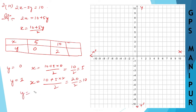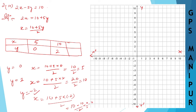Let's take y equal to minus 2. Then x equals 10 plus 5 into minus 2, divided by 2. That is 10 minus 10, which is 0, divided by 2, which is 0. So when y equals minus 2, x equals 0.